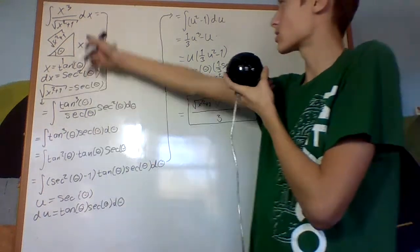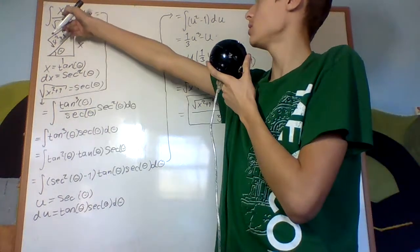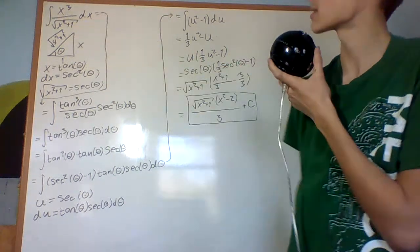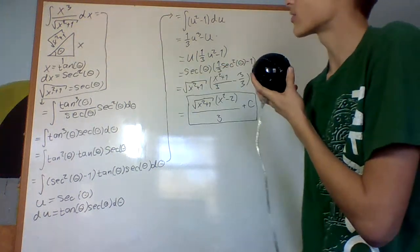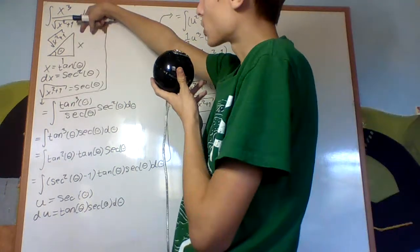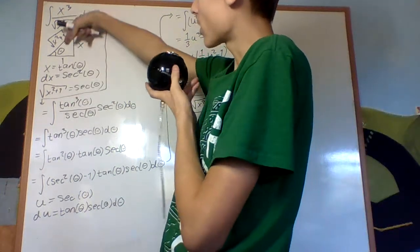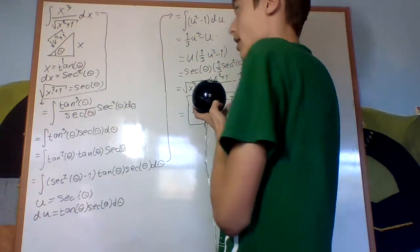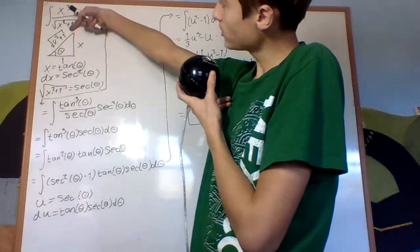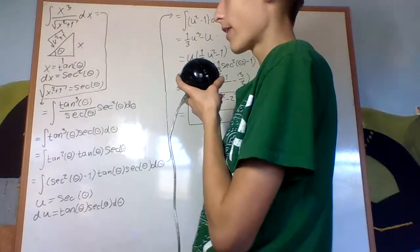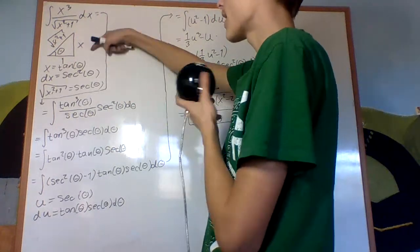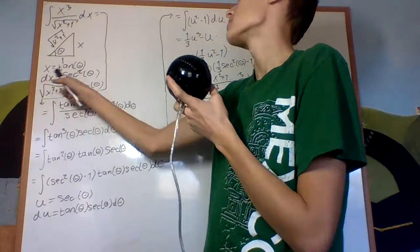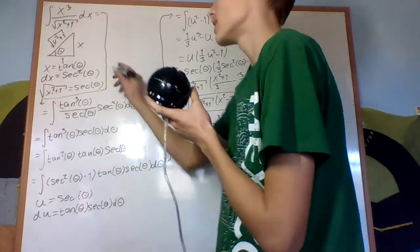In this video, I'll be integrating x cubed over square root of x squared plus 1 dx. First, what we look at is the right angle triangle with angle theta and legs x and 1. It's clear to see that the hypotenuse is the square root of x squared plus 1, and that x is tangent of theta, or that dx is secant squared theta d theta.